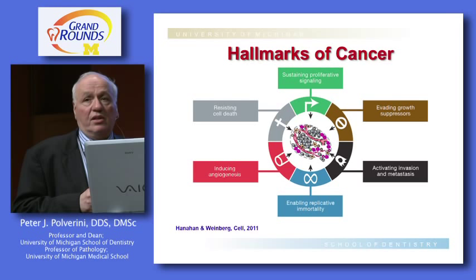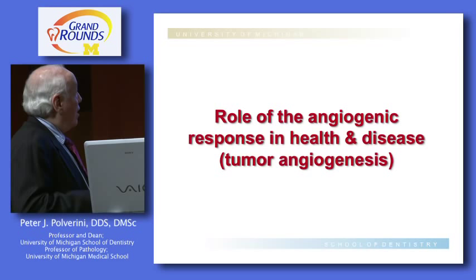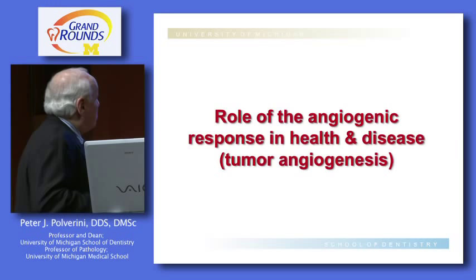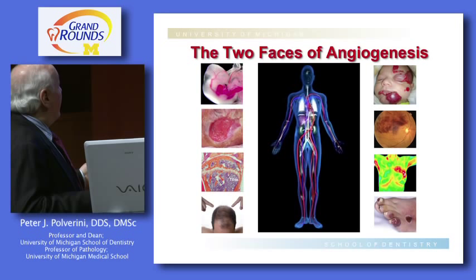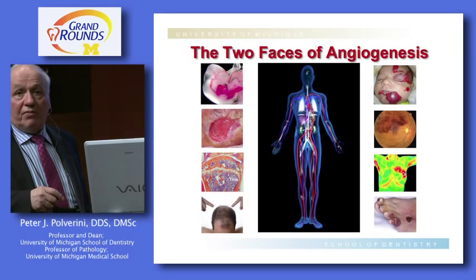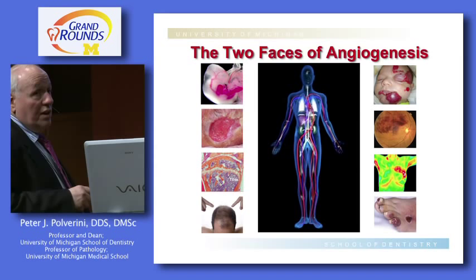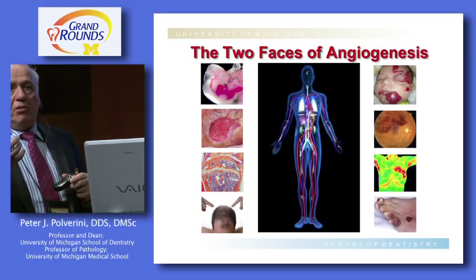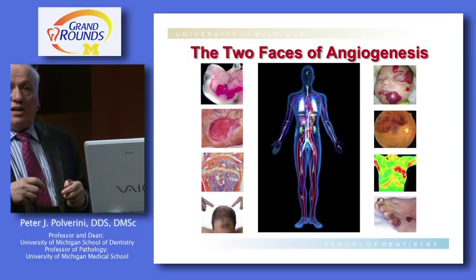We'll start by talking about the role of the angiogenic response in both health and disease. There are really two phases to this process. On one hand, we need angiogenesis for the developing embryo — without developing blood vessels, we would never have a developing embryo. It's critically important in wound healing; the term granulation tissue refers to those capillary buds that give the granular texture to the surface of a wound, and it's instrumental in healing.